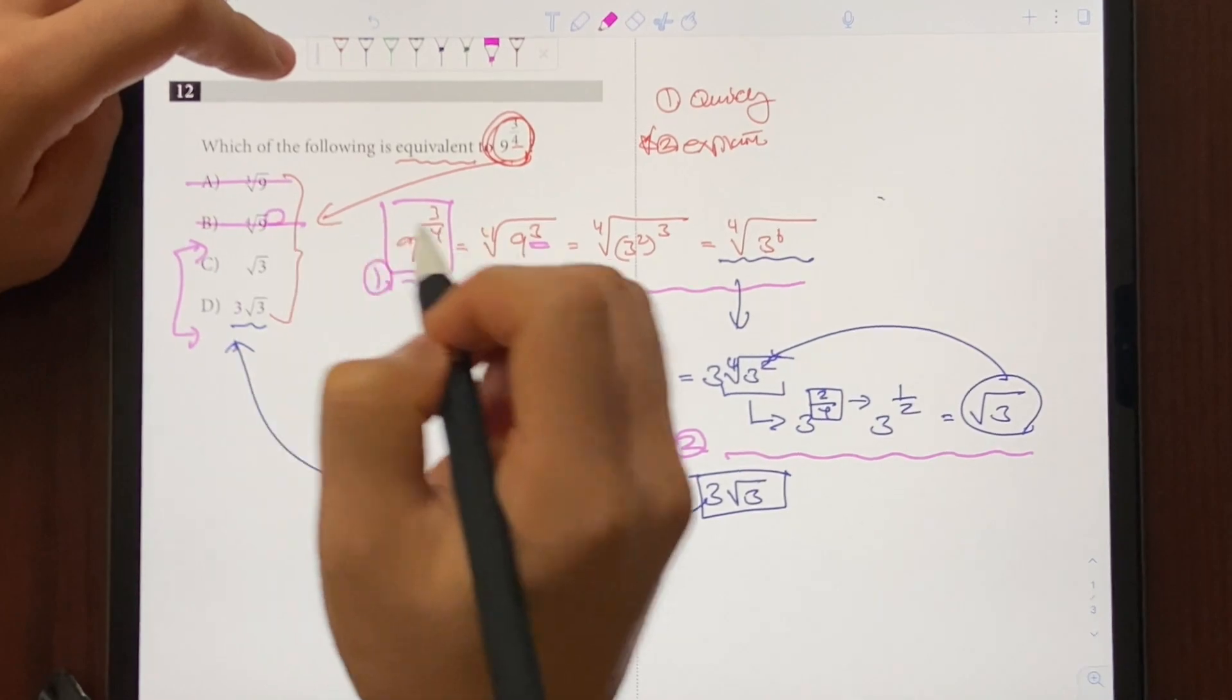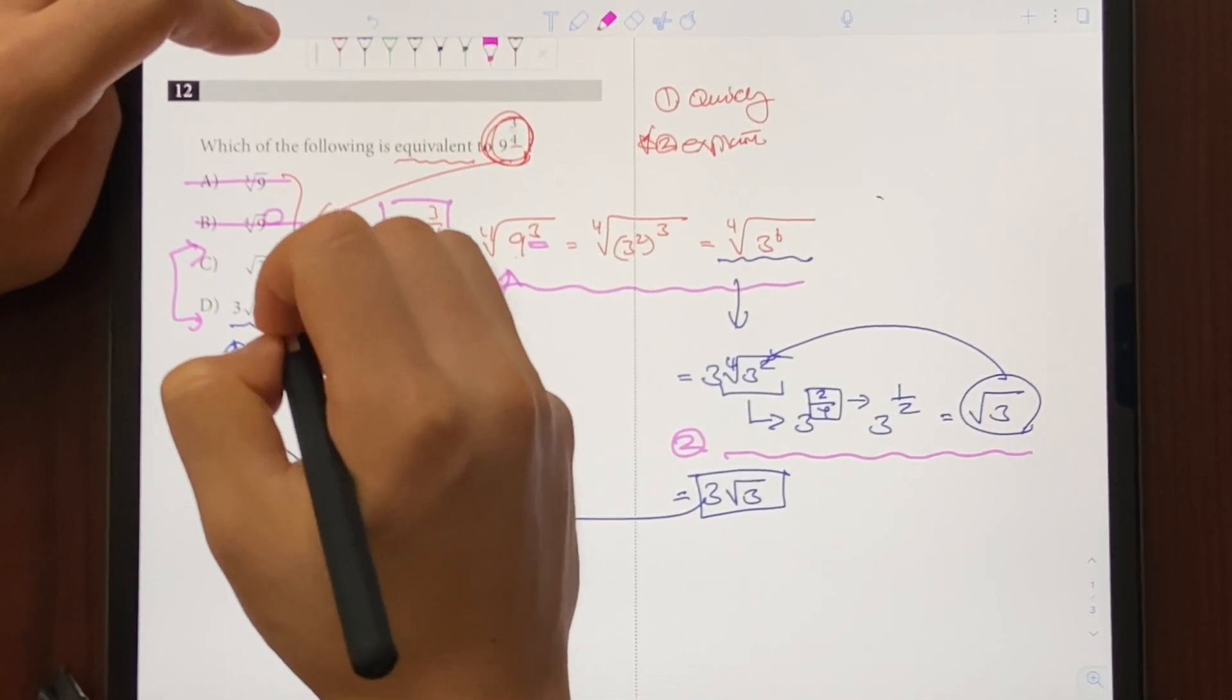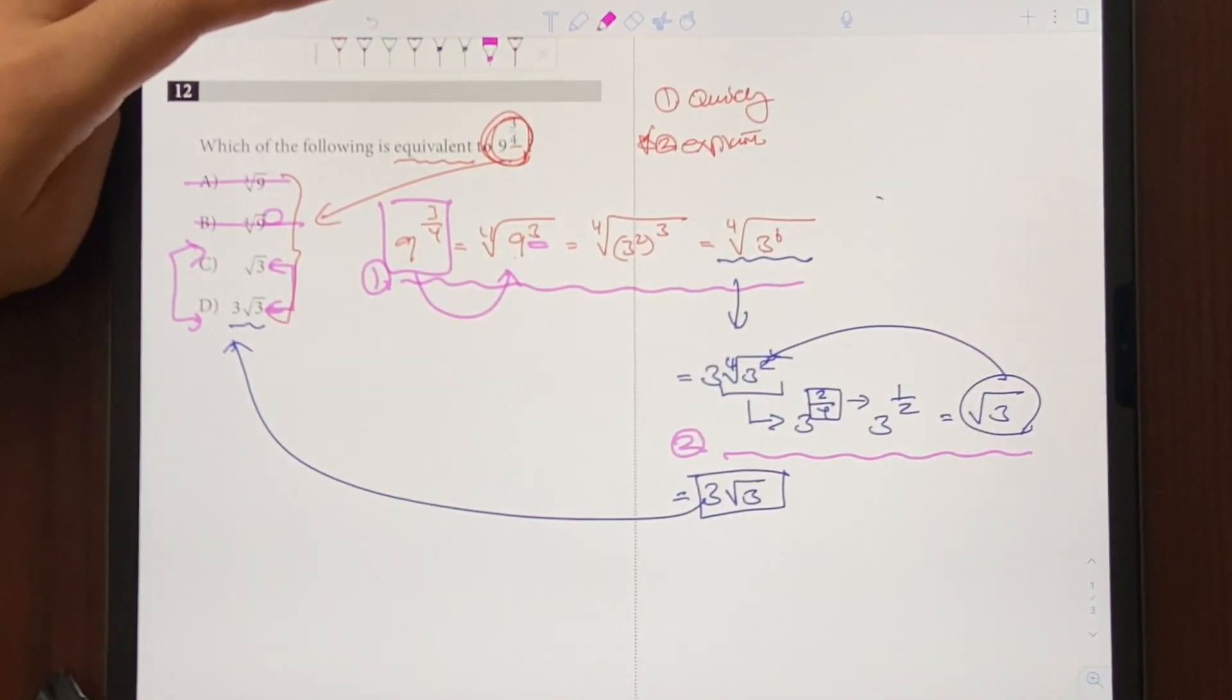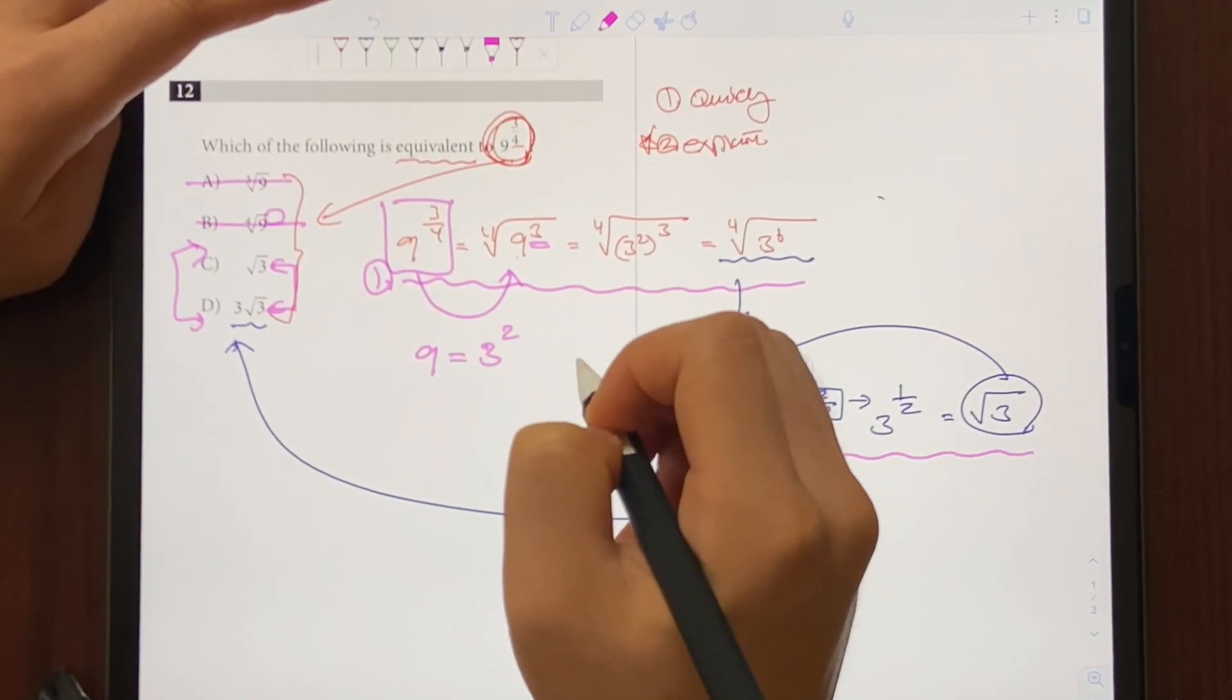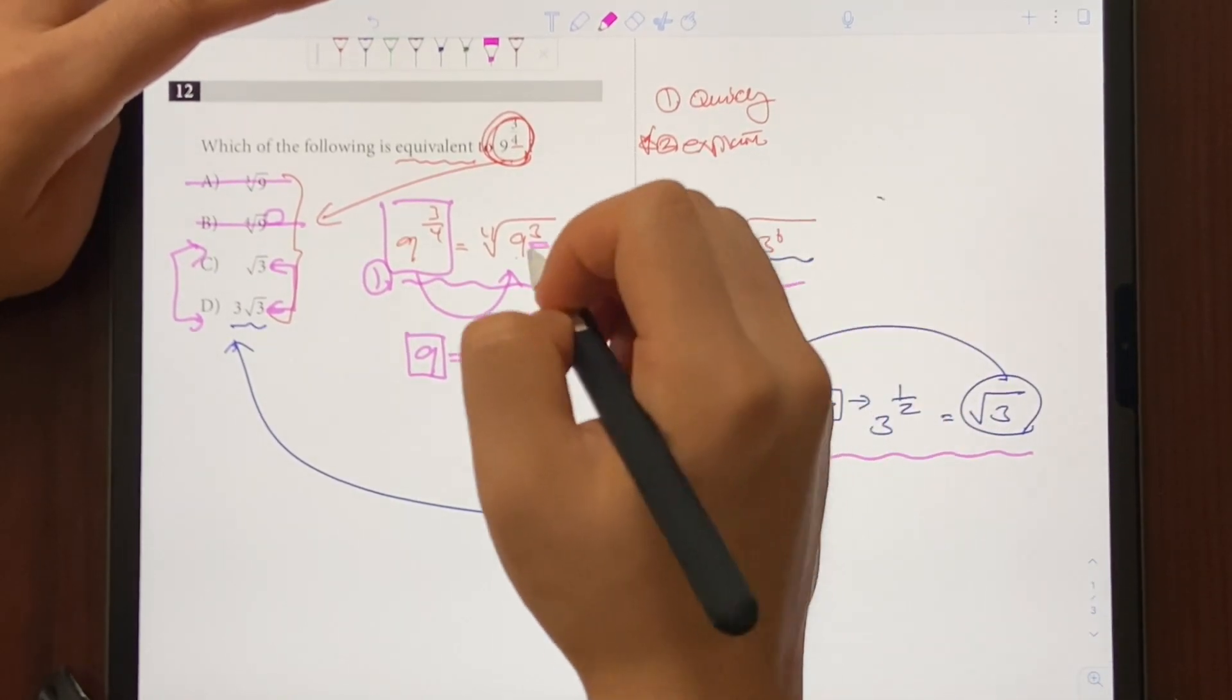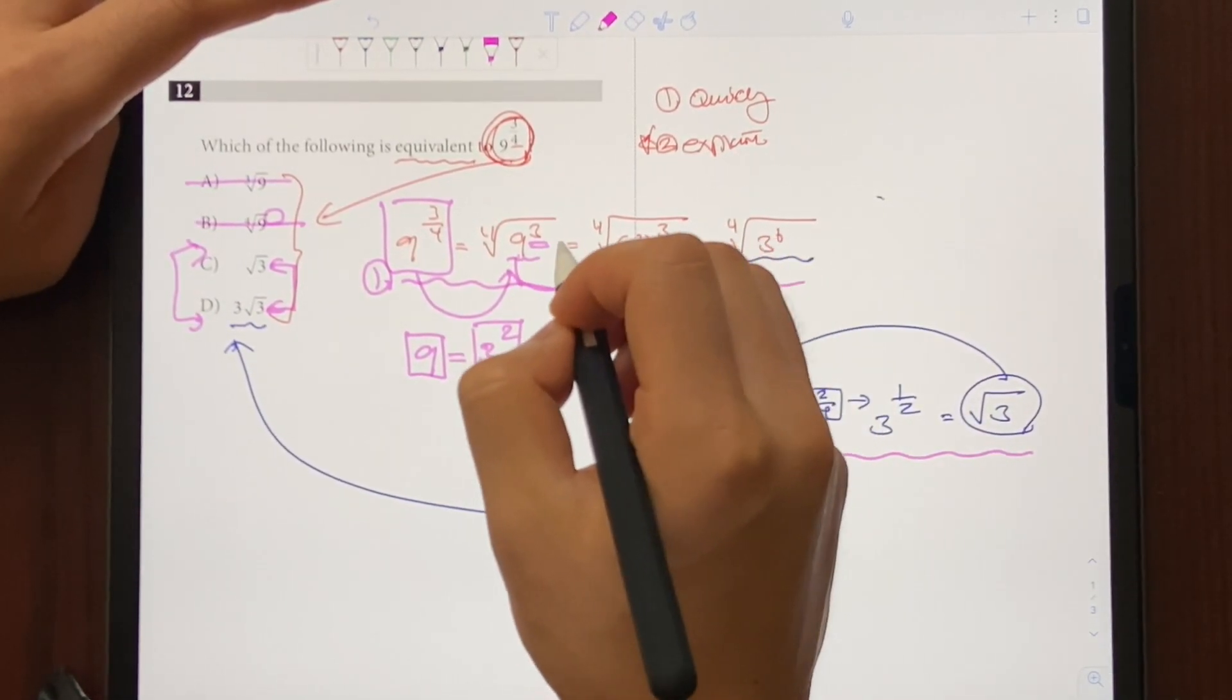And now we're down to choice C and D. And from here, are we completely stuck? Well, not really because C and D are possible options, right? And what they have in common is that they both have 3 inside the radical. And currently we have 9 inside the radical. So that tells me that maybe I need to change the 9 into a 3 and that will lead me to the right direction. So what I do here is I think about what is an equivalent version of 9 but has a 3 as a base. And we know that 3 squared is the same thing as 9, right? So whether you have 9 or 3 squared is going to be the same thing.